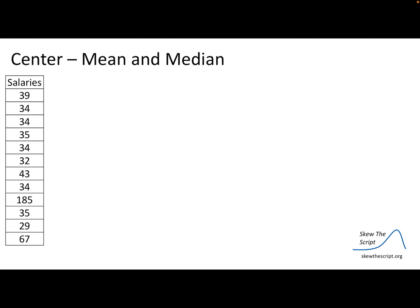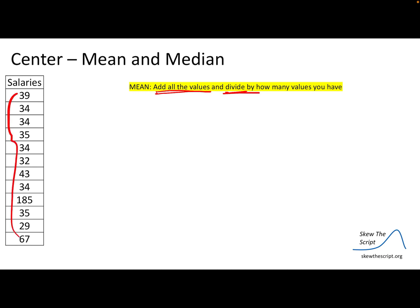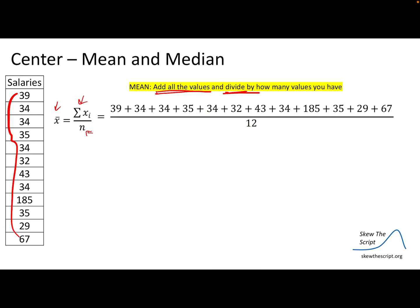Now we're going to find the mean and the median to describe the center — where most of the data is. To find the mean, you add all the values and divide by how many values you have. We're using a data set that represents several different salaries. The formula uses X-bar to represent the mean, summing all values and dividing. I write out all my values, add them up, and divide by 12 because that's how many values I have. Adding up gives 601 divided by 12, so the mean is 50.1.